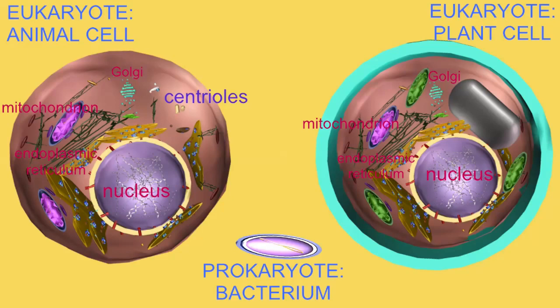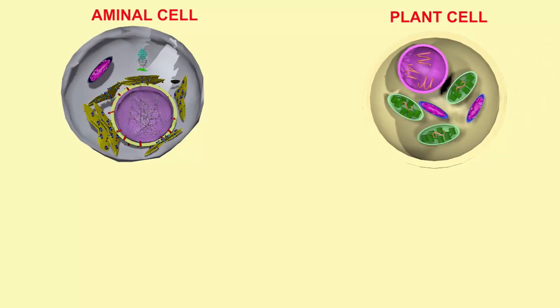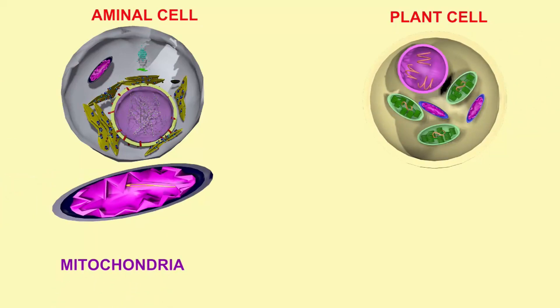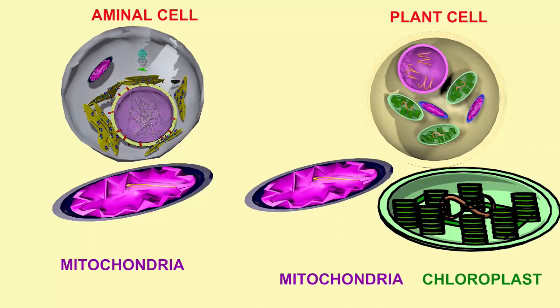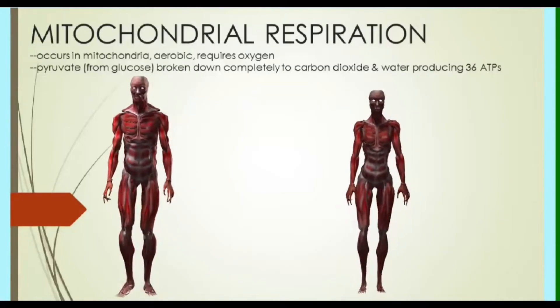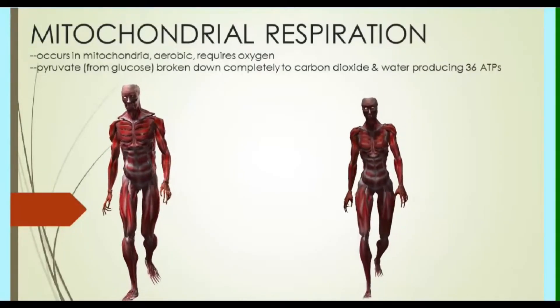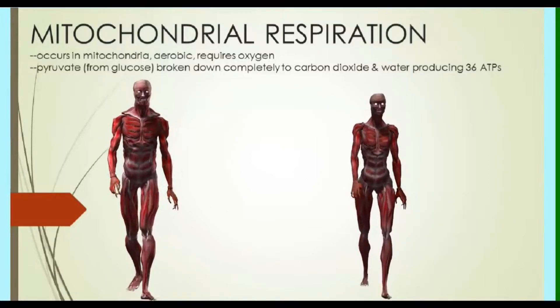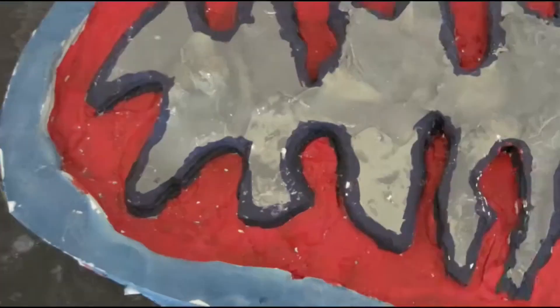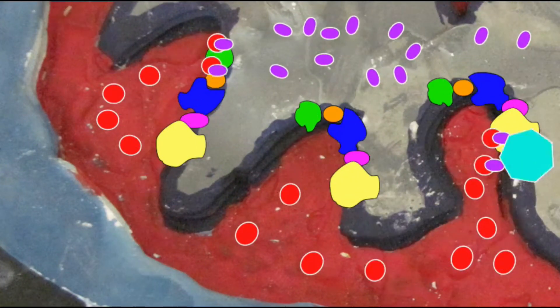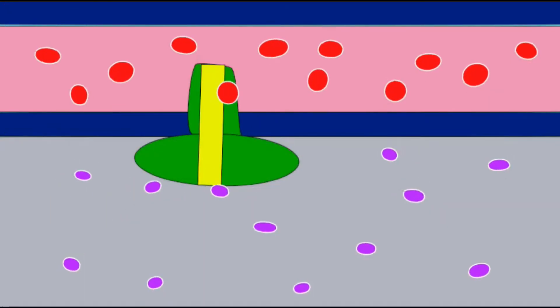However, plant cells also possess mitochondria. Obviously, if they're capturing all of the energy in sunlight and putting it into organic molecules like sugar, they would need the ability to then use that energy later. So just as animal cells use their mitochondria to get ATP from the breakdown of foodstuffs, plant cells use mitochondria to get ATP from the breakdown of the foodstuffs that they have made.